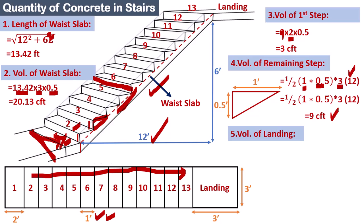Step five: calculate the volume of the landing. As seen in the plan, the landing is 3 feet × 3 feet, with a slab thickness of 0.5 feet. Volume = 3 × 3 × 0.5 = 4.5 cubic feet.